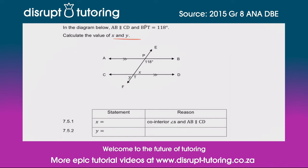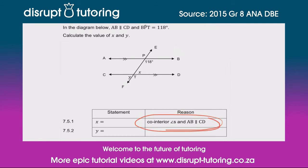So let's have a look at this question. The first thing they've given us is the reason: co-interior angles, and AB is parallel to CD. Now, what are co-interior angles? When you see the words co-interior angles, you should immediately think that there is a U-shape happening somewhere.